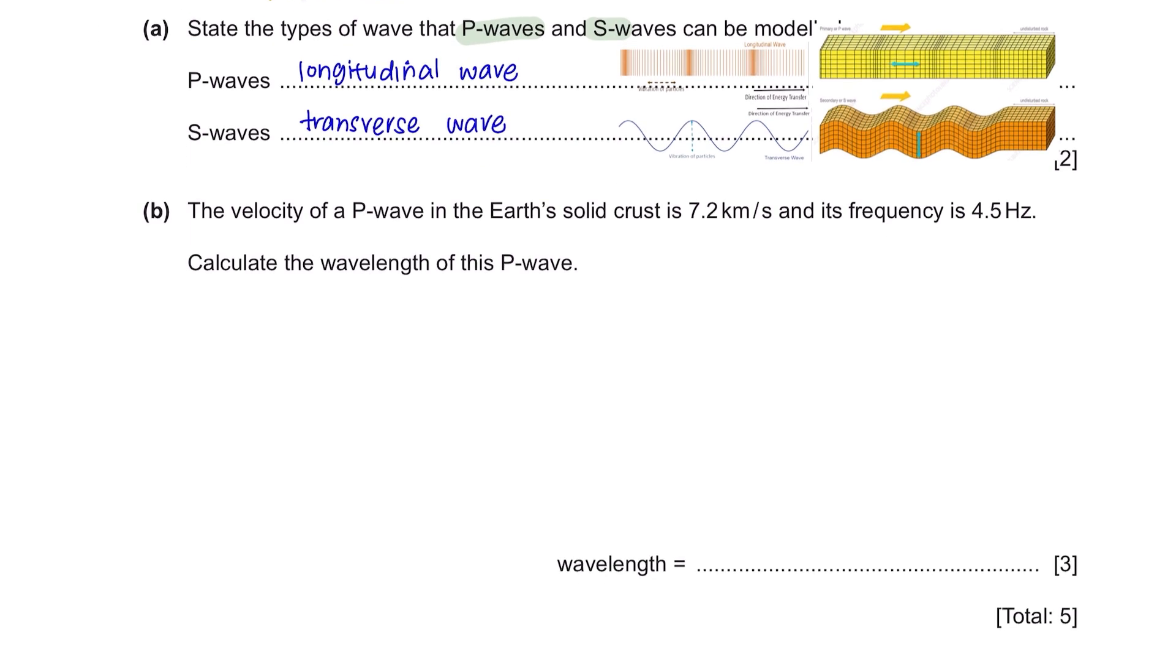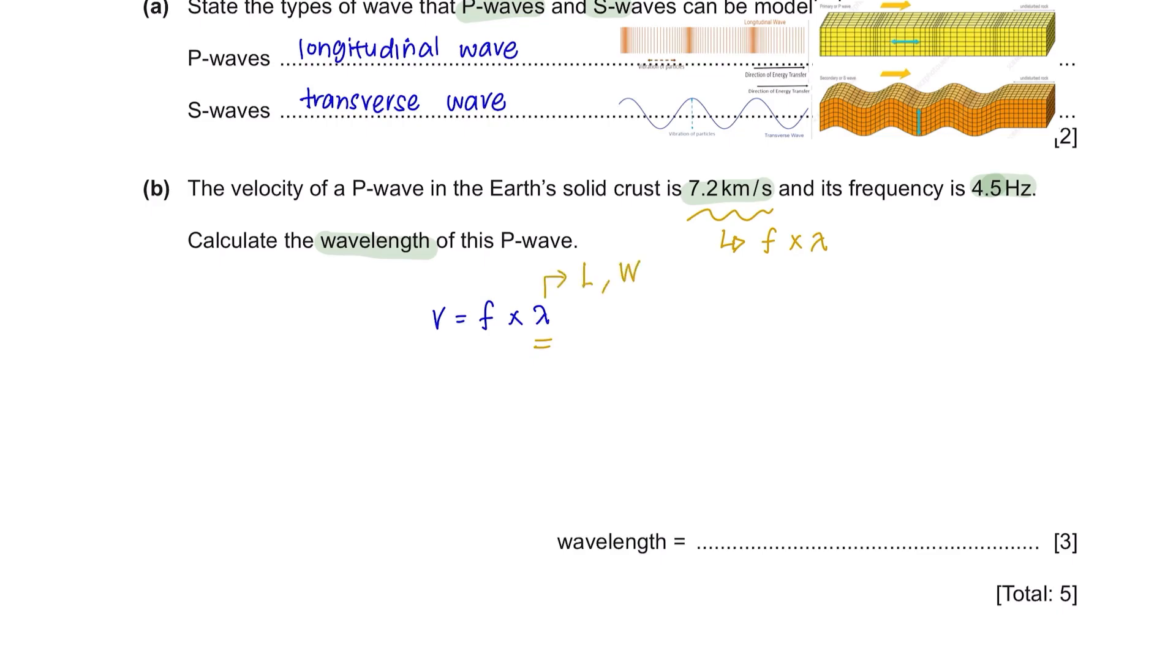Question B. The velocity of a P wave in the earth's solid crust is 7.2 km per second and its frequency is 4.5 Hz. Calculate the wavelength of this P wave. The speed of a wave can be calculated by frequency multiplied by wavelength. When stating equations, make sure you use the right letters. For example, when representing wavelength, make sure you use lambda and not L or W. If you can't remember the correct letters, then just state the word equations. Another reminder is that you should be careful with your units. Wavelength is usually measured in meters, frequency in hertz, and speed would be in meters per second.